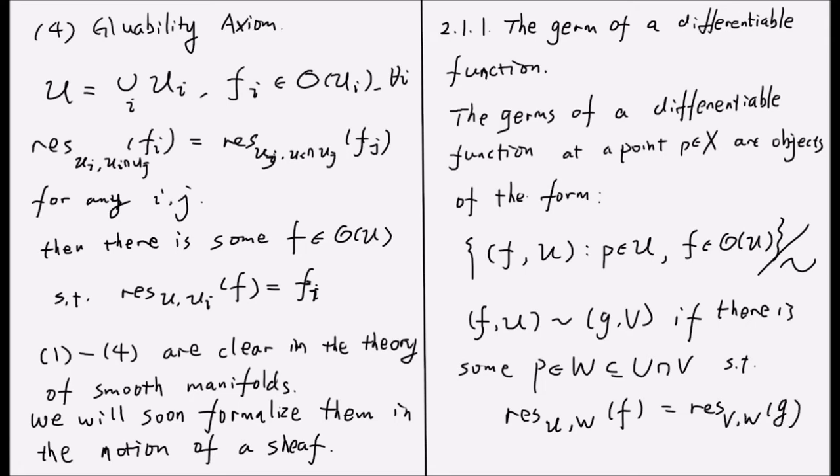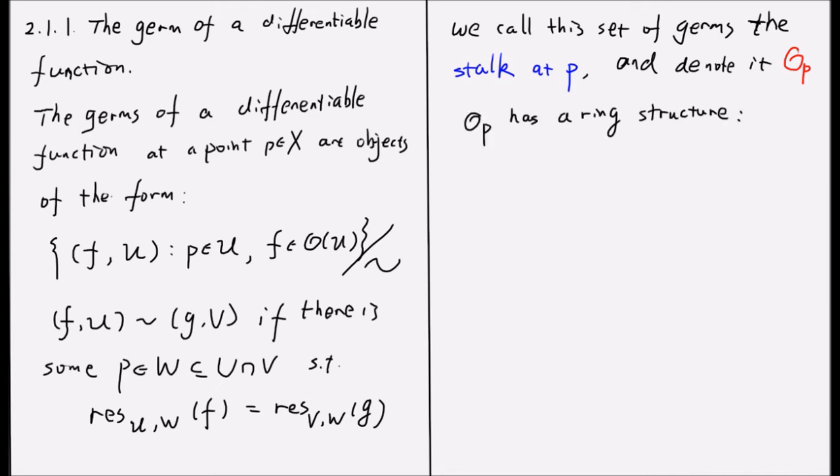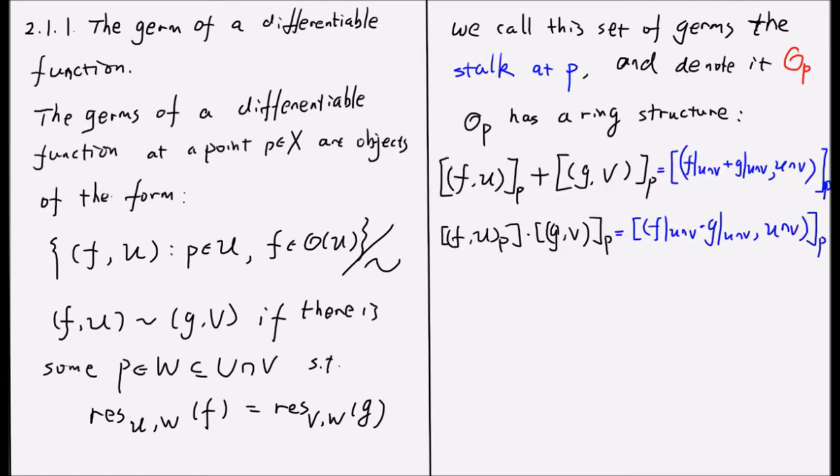such that the restriction of f on W is equal to the restriction of g on W. We call this set of germs the stalk at p and denote it by O_p. The stalk at p has a ring structure. For every two equivalence classes, we take the sum or product as a sum or product of their representatives in their communal domain. And you can easily verify that this definition is really well defined.